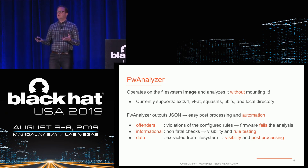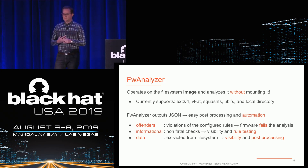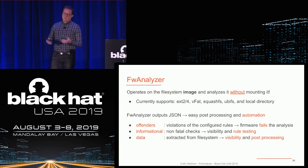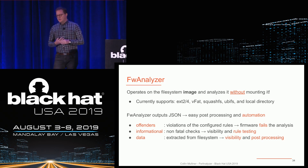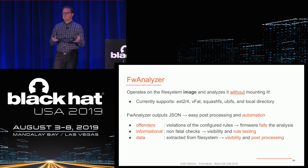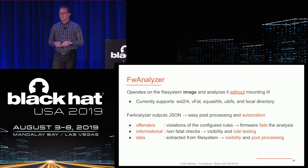On the basic output: you have offenders, which are basically violations of configured rules. As soon as you have one offending rule, your analysis fails — this is not what we want. Then you have informational output, which is basically non-fatal checks for visibility, and you can also do rule testing with that. One of my favorite features is the data feature: you can extract data from different files in the file system and they end up in the report, giving you really awesome visibility into your firmware, and you can do very interesting post-processing with it.